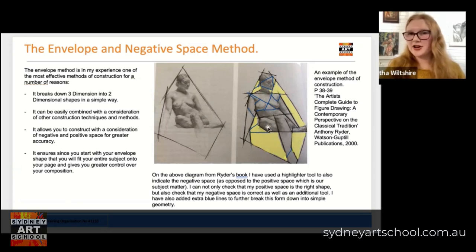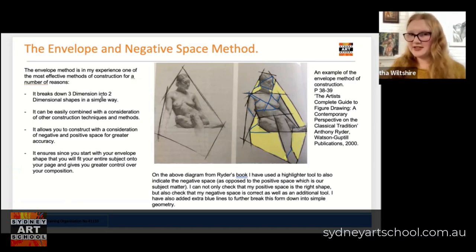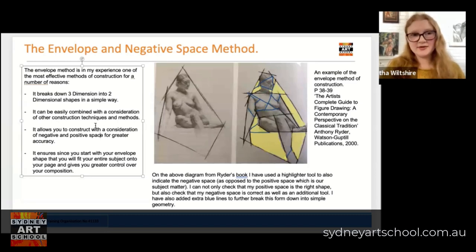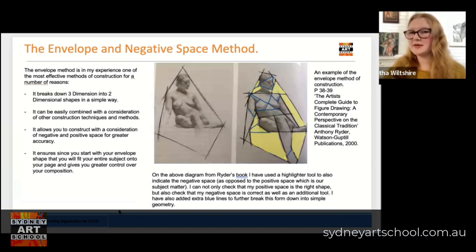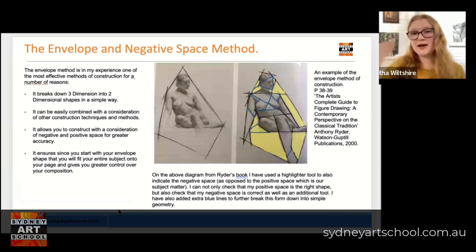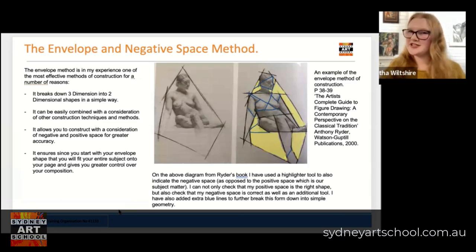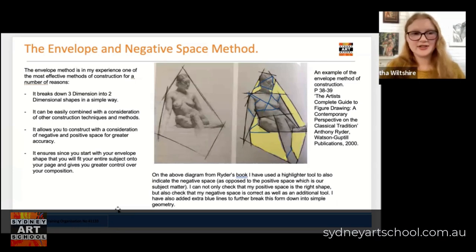That's the benefit — it really just allows you to have a starting point to then proceed to break things down into those shapes. This is also a great method because it can be easily combined with other tools and techniques. We can use comparative measuring, which we'll go through in a future video. We can also use an axis — a division line down the middle — to help with measuring. We can use landmarking, and a whole variety of other techniques that will be introduced throughout this series, to further lend themselves to this envelope technique.